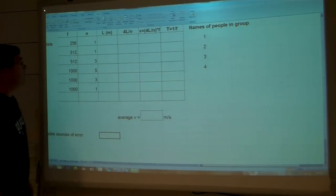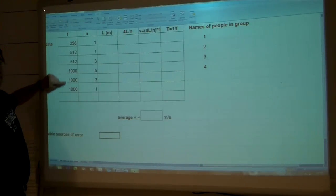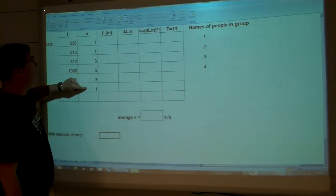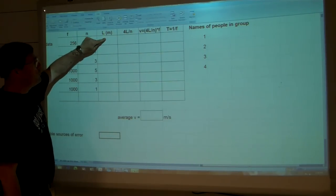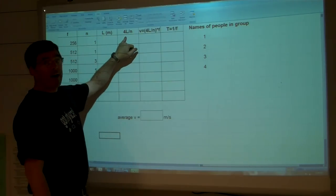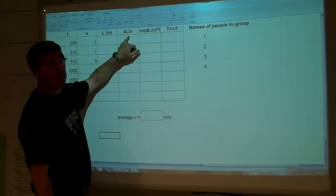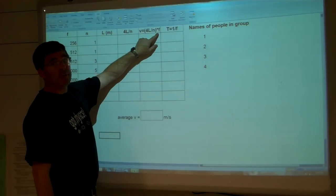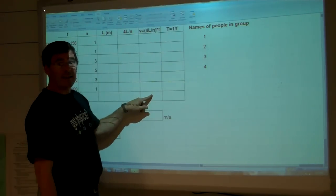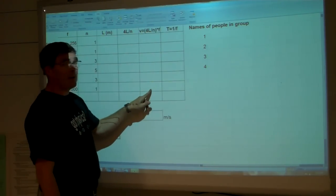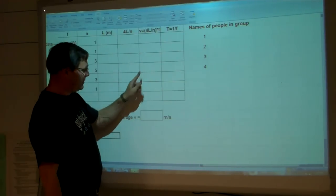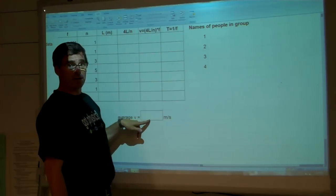In your data table, you have a column for the frequency of the source of sound, a column indicating the harmonic number n, your recorded values of length, and then here you calculate the value of 4l over n. Then in this column, multiply it by the frequency to get a value for velocity. Then what I'd like you to do is take all your values for velocity, which probably will be slightly different, one to the next, and take an average of them to get an average value.